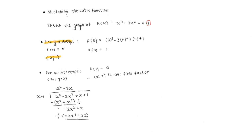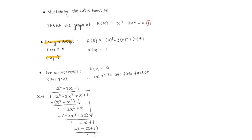We put brackets around that and subtract. Negative 2x squared minus negative 2x squared is nothing. Positive x minus 2x is negative x. Drop down the next term. Now negative x divided by x is negative 1. Negative 1 times x is negative x, and negative 1 times negative 1 is positive 1. Put brackets around that and subtract: negative x minus negative x is nothing, and 1 minus 1 is 0. This result of 0 at the end is important — it confirms this is your quadratic factor.